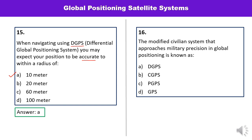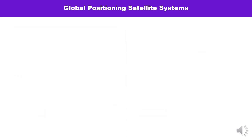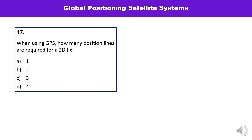Question number sixteen: The modified civilian system that approaches military precision in global positioning is known as the Differential Global Positioning System, DGPS. That is the correct answer. Question number seventeen: When using GPS, how many position lines are required for a two-dimensional fix? Three lines are required to fix a two-dimensional position.